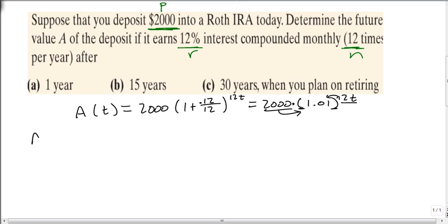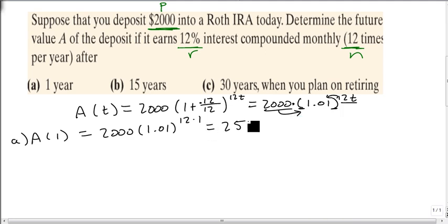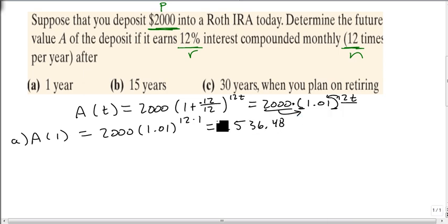So now, for A of 1, which is part A, we just plug 1 in. We go to our calculator now, and we get 2,000 times 1.01 raised to the 12th power. We hit equal, and it shows we have $2,536.48. So after a year, we've made $536.